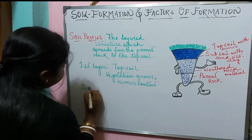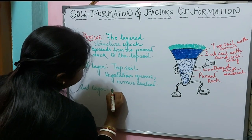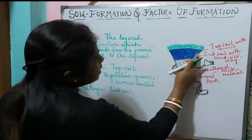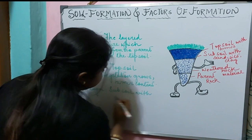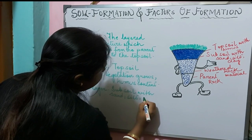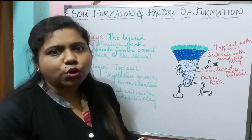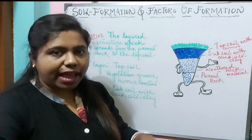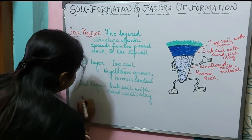The second layer is the sub soil, with sand, silt, and clay. If you are going to dig out the soil, that means you are removing the top soil and going down to the sub soil.